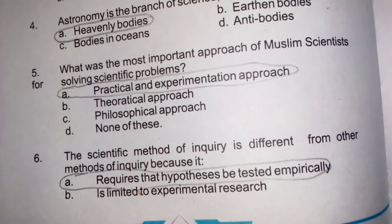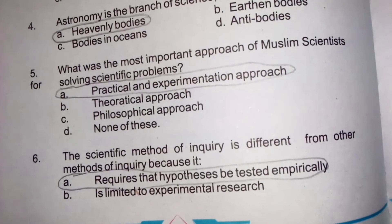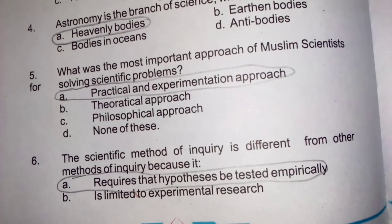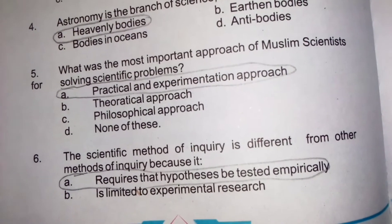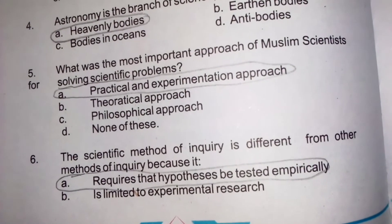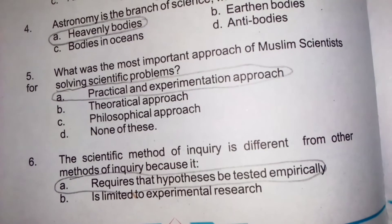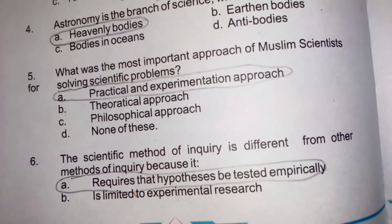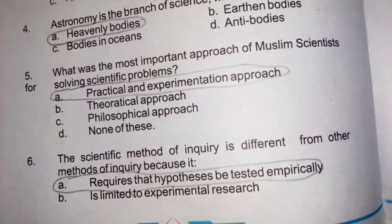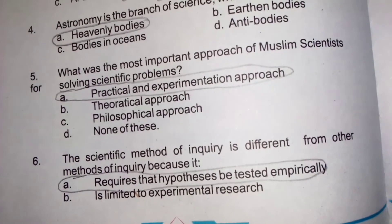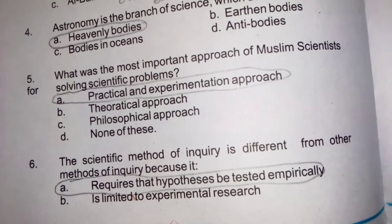The scientific method of inquiry is different from other methods of inquiry because it requires that hypotheses be tested empirically. اس میں جو hypothesis ہوتا ہے اسے empirically test کیا جاتا ہے، یہی اس کا distinction ہے۔